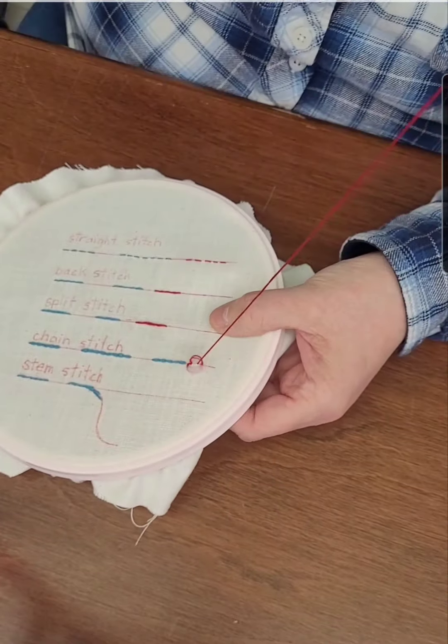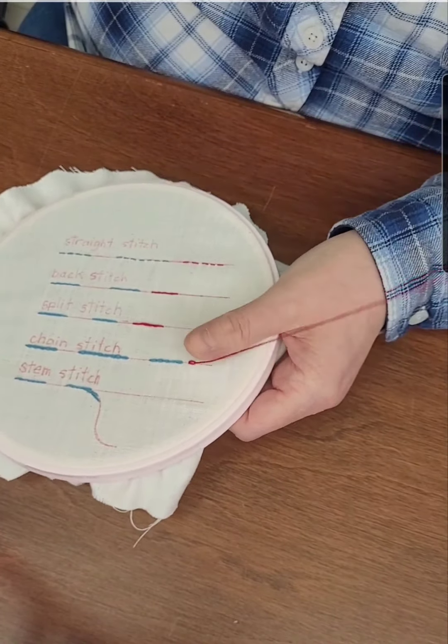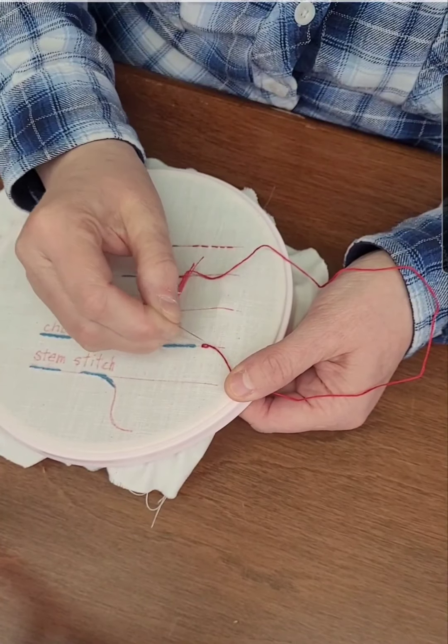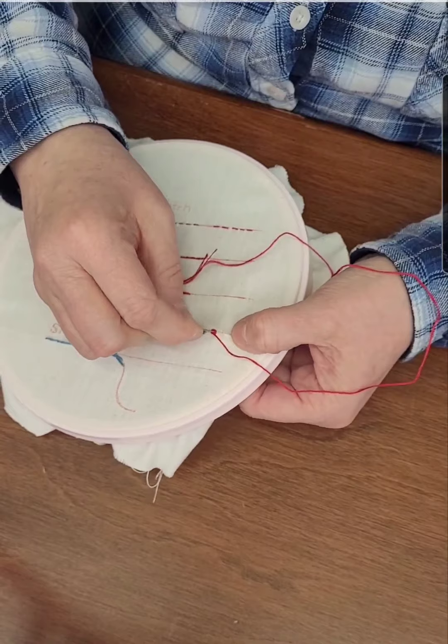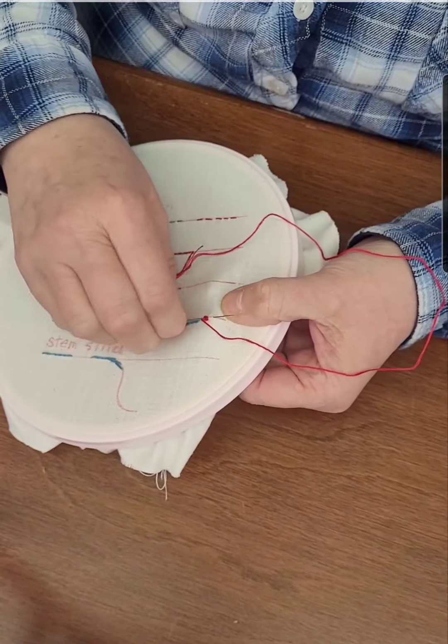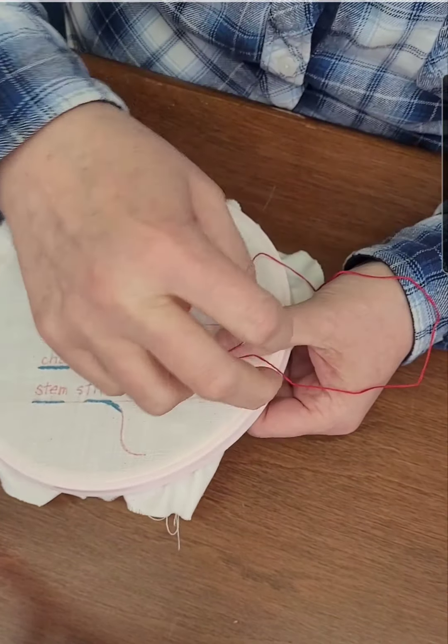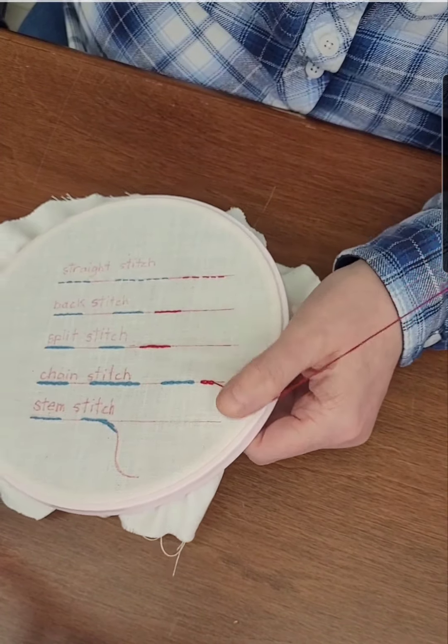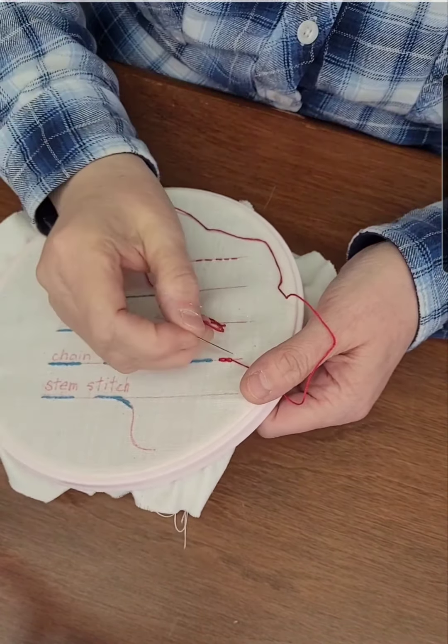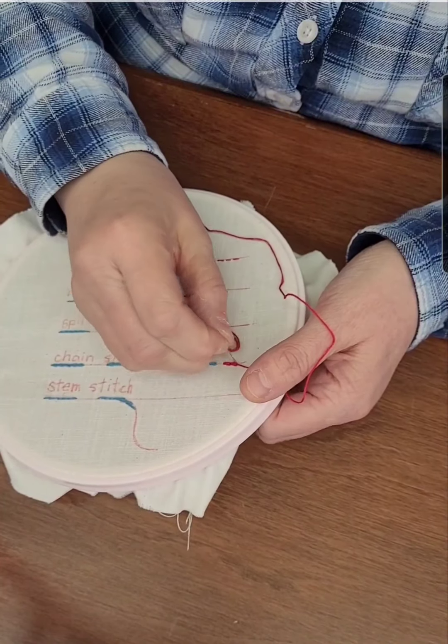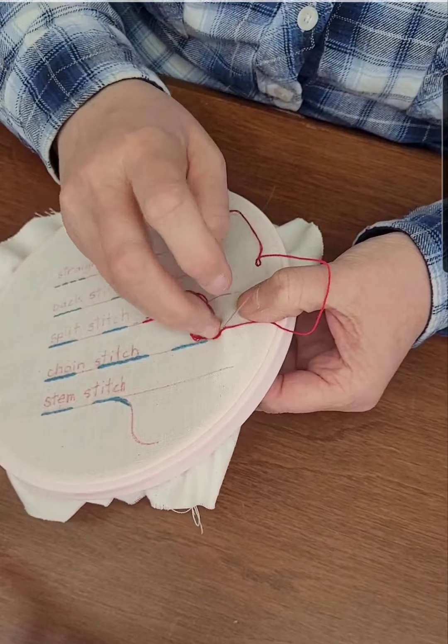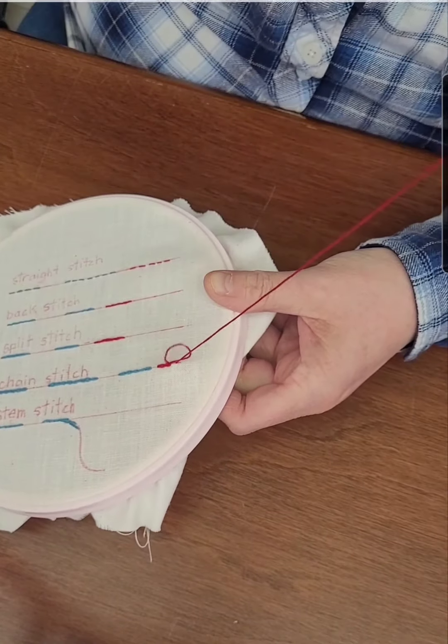You're going to make a loop and hold down with your thumb. You're going to go back in and come up the length you want your loop to be. Then make your loop, go back into that same spot where you came up with the thread and create your next stitch. Slowly pull it off to the side and stop when you get to your length of the chain that you want and repeat.